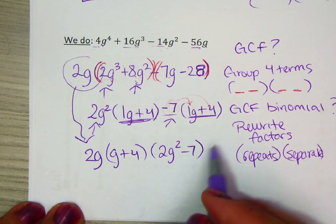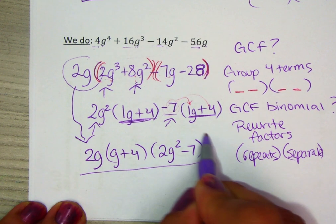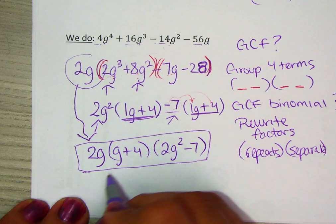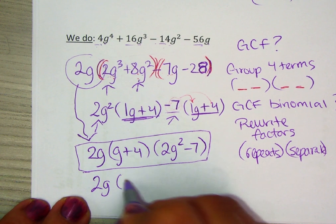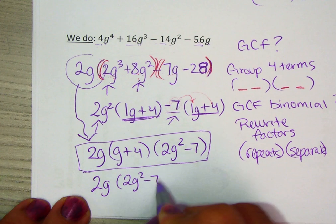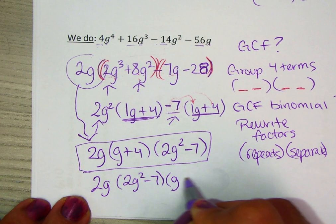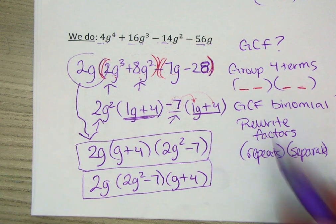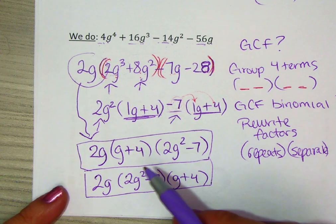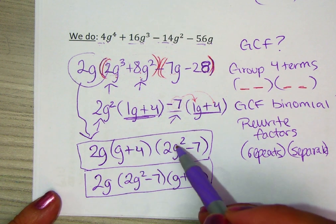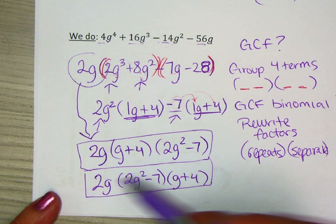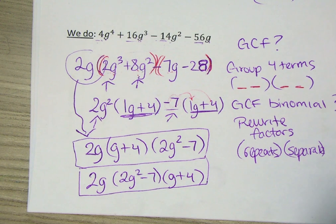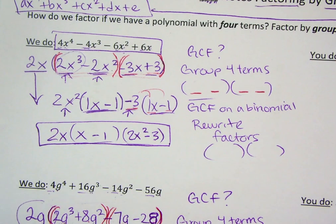This may be how it was written, but some students wonder if it could look the other way, like if they put 2g² minus 7 first instead of g plus 4. Of course, these are both going to create the same graph. It's like saying 1 times 2 times 3 is the same as 1 times 3 times 2. I hope this video helps you with factoring by grouping. If you need more help, let me know.